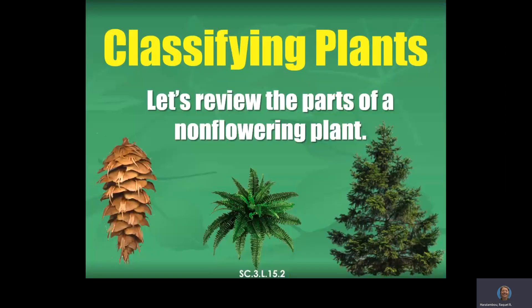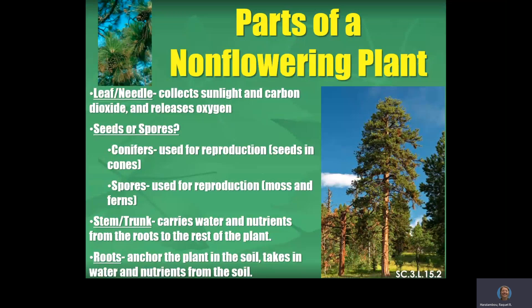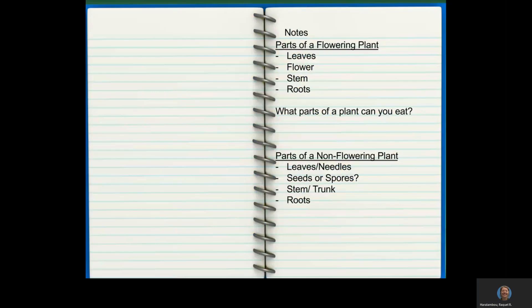Let's go ahead and classify plants. Let's review the parts of a non-flowering plant, so a little bit different. We have the leaf or the needle, and these collect sunlight and carbon dioxide. And they have seeds or spores. Conifers, used for reproduction, the seeds and the cones. Or spores, used for reproduction on moss and fern. Stem or trunk, it's almost like the stem. The root, that carries the water and the nutrients from the roots to the rest of the plant. And then the roots actually anchor the plant in the soil and takes in water and nutrients. So we can see a little bit of a difference between parts of a flowering plant and parts of a non-flowering plant and how they're different. So really, the only difference is the non-flowering plant has needles. It's going to have spores instead of seeds. And then we can sometimes call it a trunk rather than a stem.